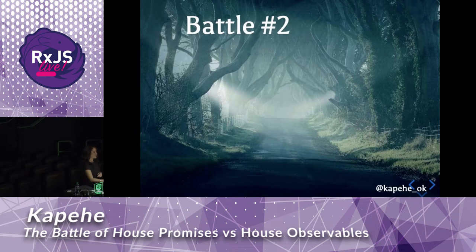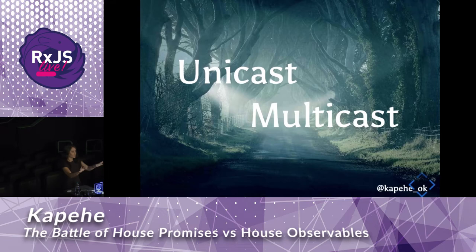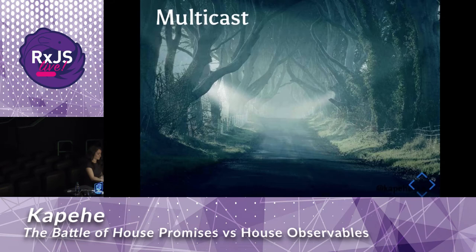Let's move on to battle number two. In this exhausting battle, we're going to go over unicast and multicast. Unicast is a one-to-one communication process. Multicast is a one-to-many communication process. How does this work in the world of Game of Thrones? Let's visualize this.